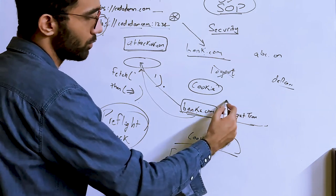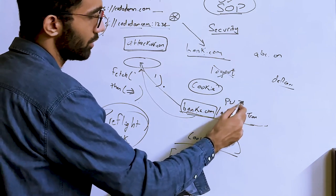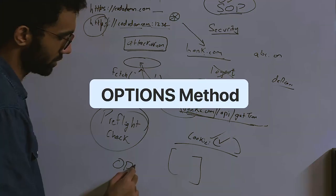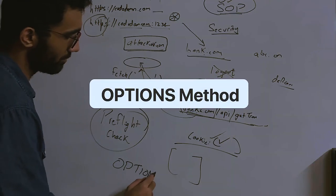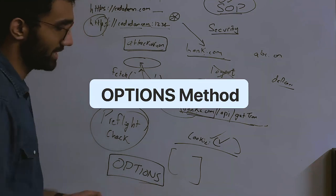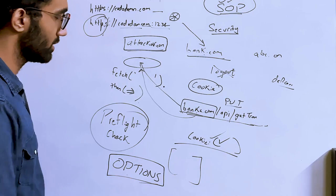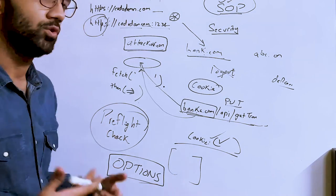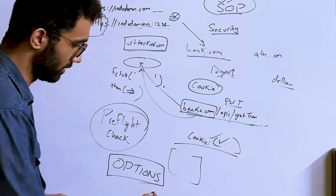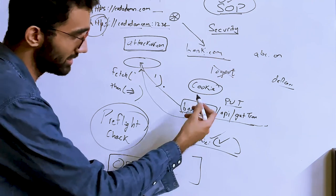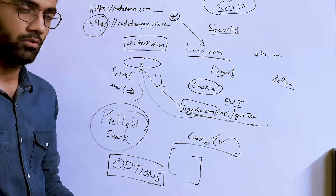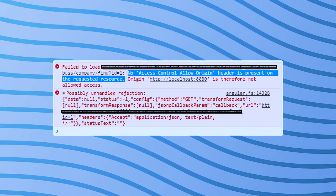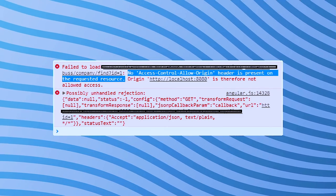Instead of performing the actual request, the browser uses the OPTIONS HTTP method — a special method that servers are usually configured to respond to with what methods are allowed and what origins are allowed to make that request. This is the preflight check.